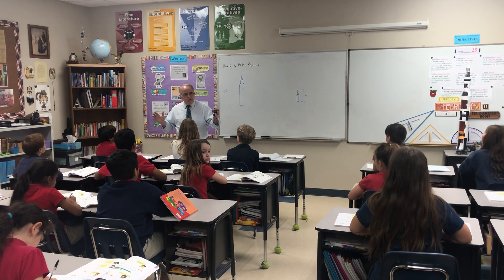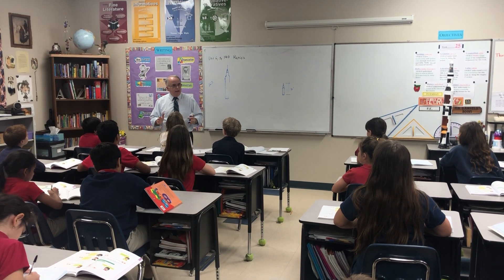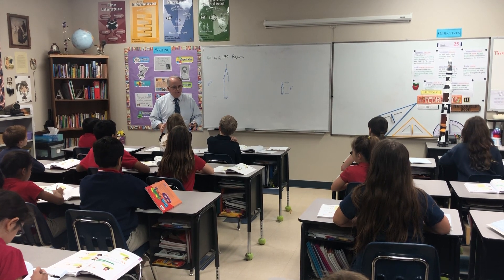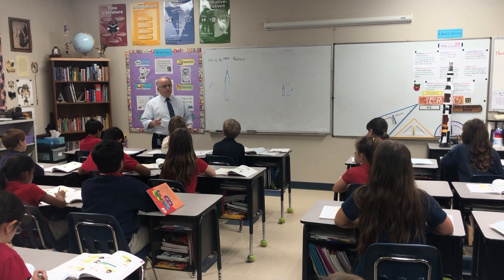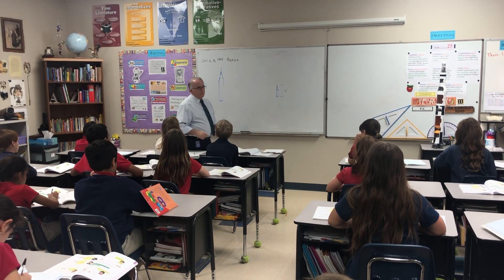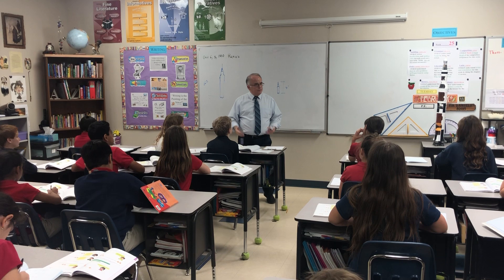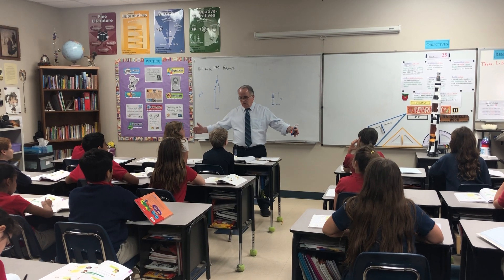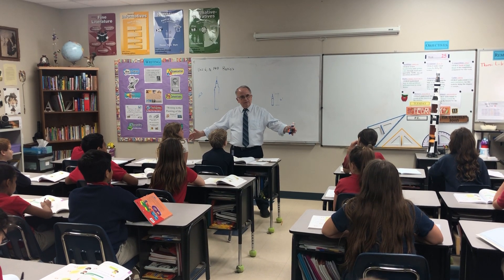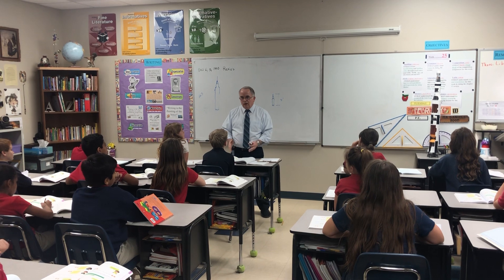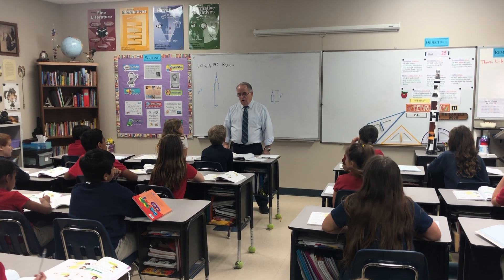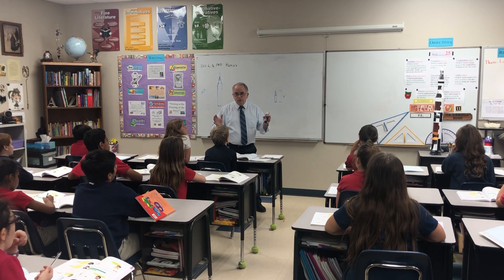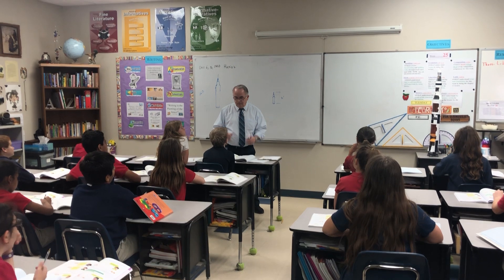Somebody shrunk it down, but it had to look right — the proportions had to be correct. I laid it on the desk and put the meter stick on top of it, and I said: what if the wings were as wide as the meter stick? Would the model look like the real thing? No. So the proportions have to be right. When you're shrinking something down, the proportions have to be correct.